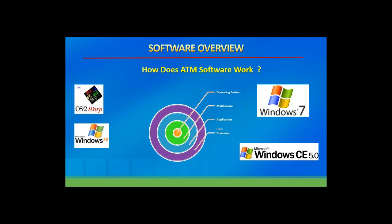Software in ATMs has evolved significantly. ATMs originally ran on manufacturer-specific software, then the industry standard became IBM OS/2 until IBM announced end-of-life for OS/2. At that point all ATMs migrated to Windows — first Windows XP, currently migrating to Windows 7, and for smaller machines Windows CE. Most devices should be on Windows 7 today. Windows XP is no longer supported by Microsoft, meaning no more security patches, which means any ATM running Windows XP is in violation of PCI because it cannot receive security patches. Windows 10 will be next, around 2020.